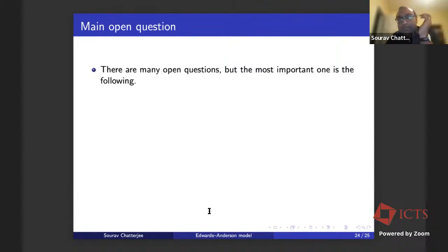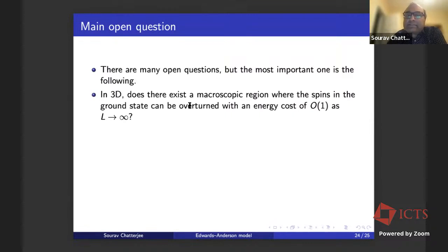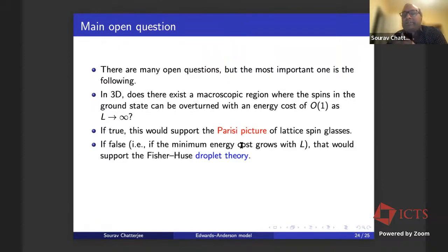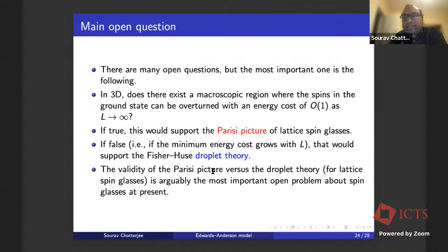What are the open questions? The most important one is: in three dimensions, does there exist a macroscopic region where the spins in the ground state can be overturned with an energy cost of order one as L → ∞? If true, this would support the Parisi picture of lattice spin glasses. If false — if the minimum energy cost grows with L — that would support the droplet theory of Fisher and Huse. This validity question between the Parisi picture versus droplet theory is arguably the most important open question about lattice spin glasses at present.